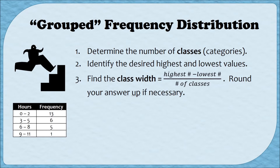Our third step is to determine what's called the class width, and we've got a formula for that. The class width is going to give us an indication about what our intervals are going to look like. Our categories in this example are from 0 to 2, 3 to 5, 6 to 8, and 9 to 11, and the class width is going to help us figure out where those beginning and ending numbers come from.